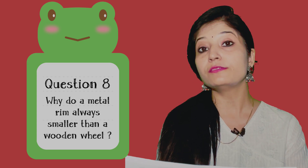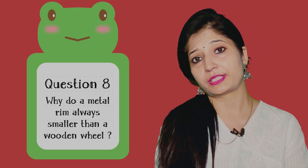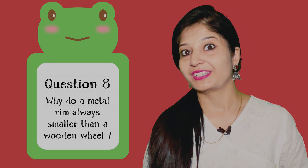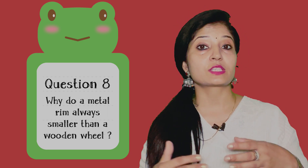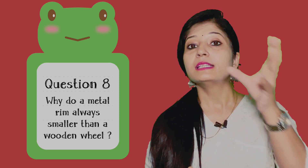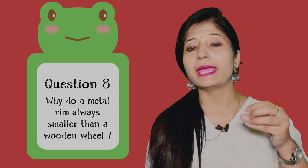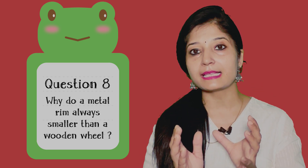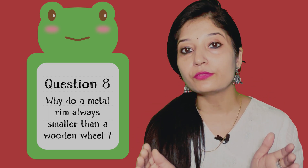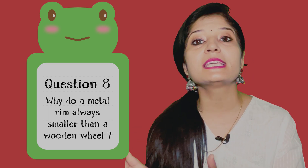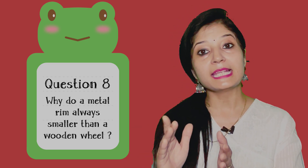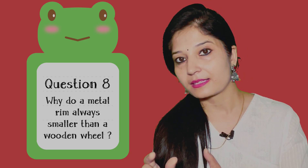The next very important question: explain how a metal rim, slightly smaller than a wooden wheel, can be fixed onto it. As we have studied, metal expands on heating. The rim is made slightly smaller than the wheel. When the rim needs to be fitted, heat is applied to it, it expands slightly, and then it can easily be fixed onto the wheel.